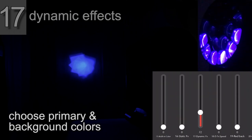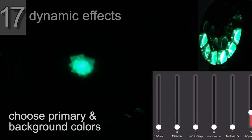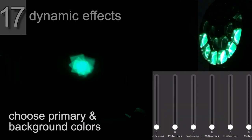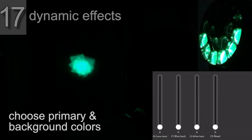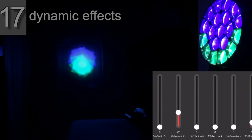In the higher values they're basically just predetermined combinations. The dynamic effects work basically in the same way. You can pick a primary color—let's change this primary color to green. And you can pick a background color—we'll pick blue as a background color.